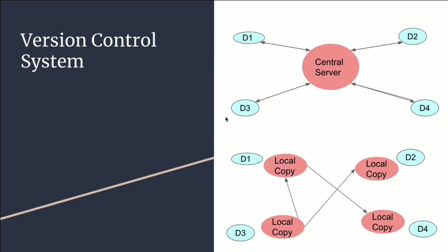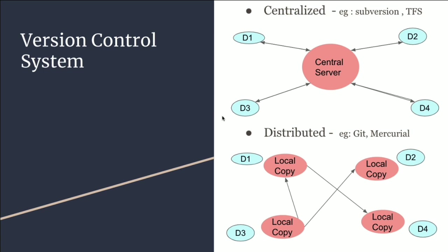What are the types of version control systems? Version control systems are mainly of two types: centralized and distributed. In centralized, we have a central server and all developers access the same server, so they have a dependency on a single server for check-ins and getting the latest code. If that server fails, it will affect their work. In distributed, all developers will have a local copy with themselves. They can create their own branches, take a local copy from the repository, and easily merge their code to other branches. When the work is finished, they can merge the code to the main repository. Git and Mercurial are examples of distributed version control, and Subversion and TFS are examples of centralized.